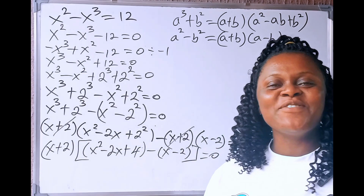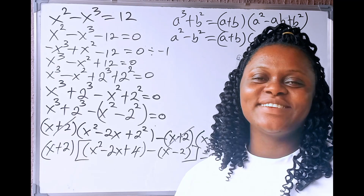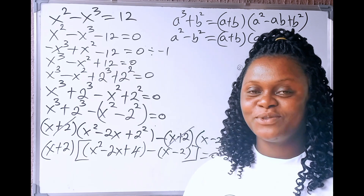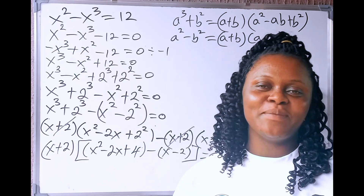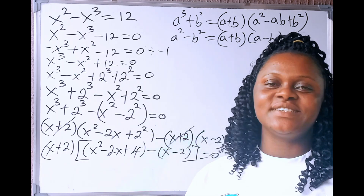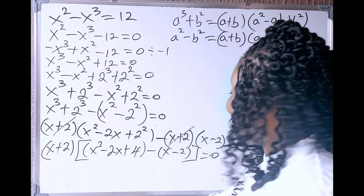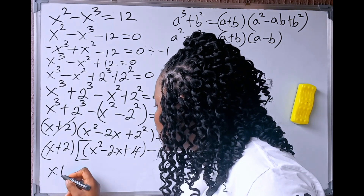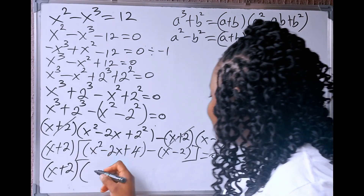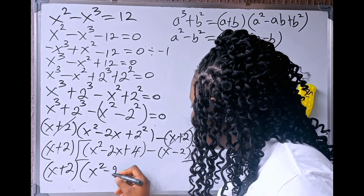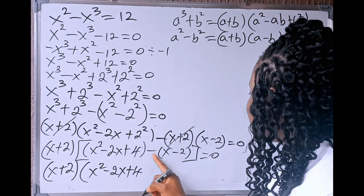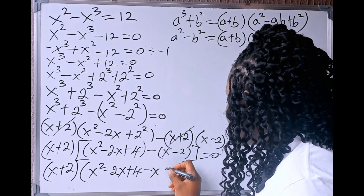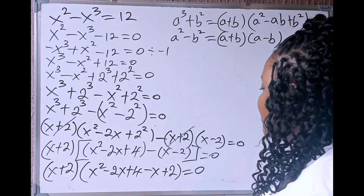Now, let's continue and simplify. We'll have (x plus 2) into (x squared minus 2x plus 4), then use this minus to open the bracket: minus times x gives minus x, and minus times minus 2 gives plus 2. All this equals 0. Please, if this is the first time you are coming across this channel, kindly click the subscription button and also click the notification bell.